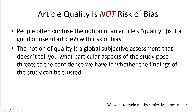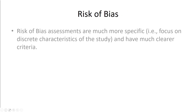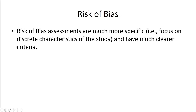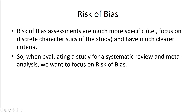We want to avoid subjective, mushy assessments. Risk of bias assessments are much more specific — they focus on discrete characteristics of the study and have much clearer criteria. So when evaluating a study for a systematic review and meta-analysis, we want to focus on risk of bias.